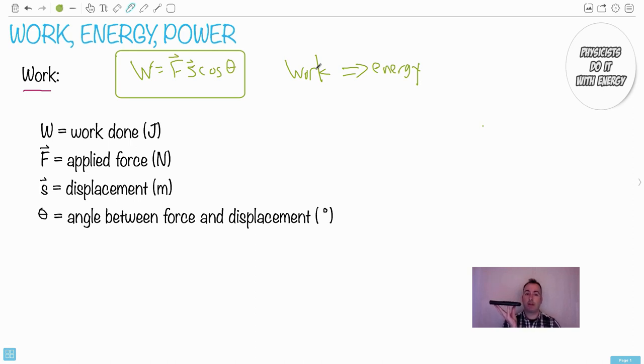Cosine of zero is just one. So in this case I have work done, I do work against gravity. However, look at this special case.